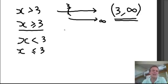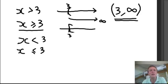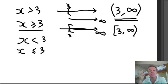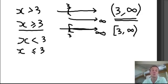Now, if x is greater than or equal to 3, again the same thing — here's the number line, here's the 3. This time we're going to use a square bracket, and again arrows pointing that way. It's still 3 to infinity, but this time we use the bracket. You can never include infinity, so that's always a parenthesis. Notice the two differences: one without the equal sign uses a parenthesis, one with the equal sign uses a bracket.